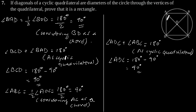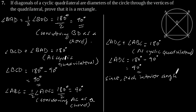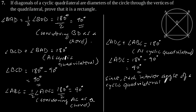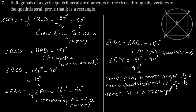Now here we can say that as each interior angle of the cyclic quadrilateral is 90 degrees, hence it is a rectangle.